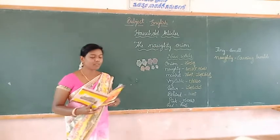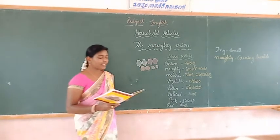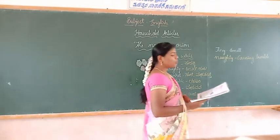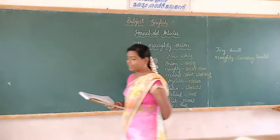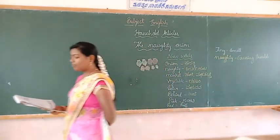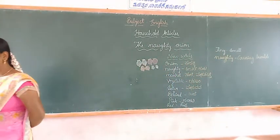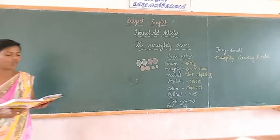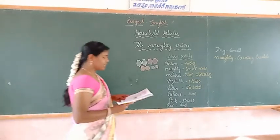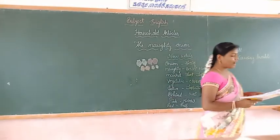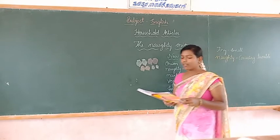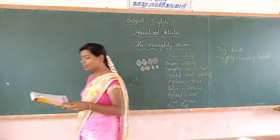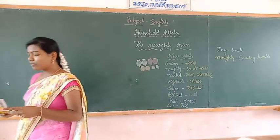Look at your textbook — The Naughty Onion. Goku went to the market. He bought a kilo of onions from the vegetable cellar. Some were big, some were small, some were really tiny. Some were pink, some were red, and some were almost white. He put them in a corner on the floor.